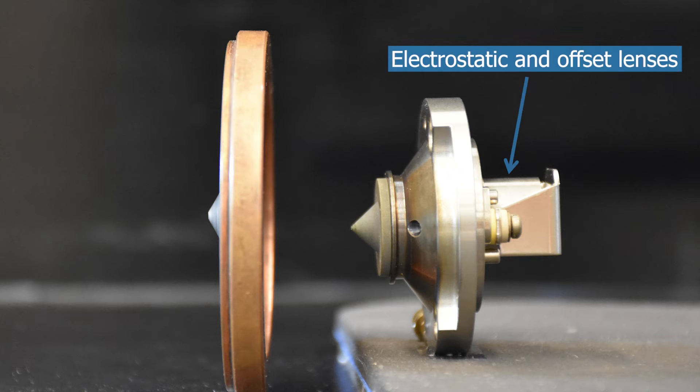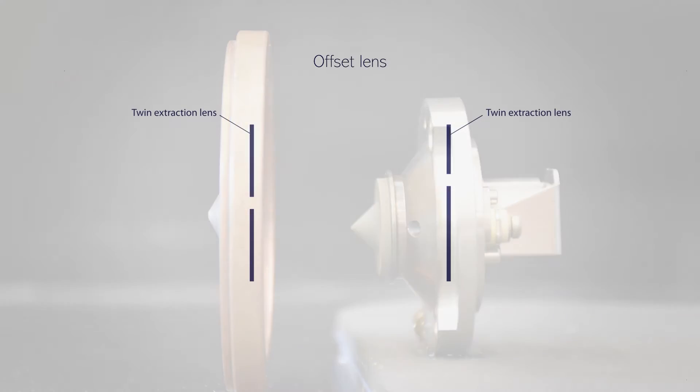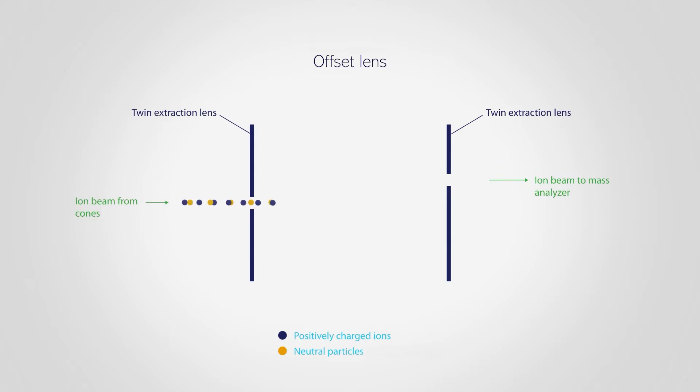In the mass spectrometer, the ions pass through two electrostatic lenses, which focus them, and then through an offset lens. In the offset lens, a strong electric field deflects cations upwards towards the collision cell. Uncharged particles and photons are not deflected and do not proceed. This improves system performance by reducing background signal.